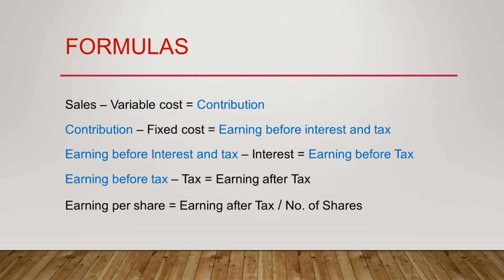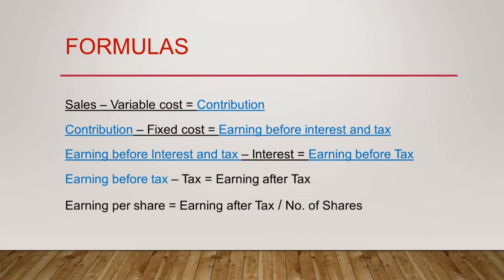Then we looked at certain formulas. Sales minus variable cost equals contribution. After the deduction of fixed cost from contribution we arrive at Earnings Before Interest and Tax (EBIT). When we deduct interest from EBIT we arrive at Earnings Before Tax (EBT), also referred to as Profit Before Tax (PBT). After tax deductions we arrive at net profit for the business — the profit which can be distributed to shareholders or reinvested in the business after repaying all obligations.